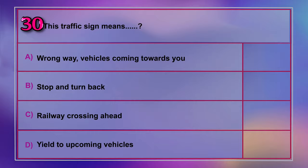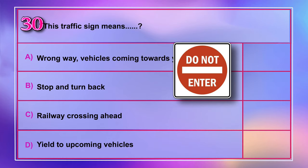Question number 30: This traffic sign means A) wrong way — vehicles coming towards you, B) stop and turn back, C) railway crossing ahead, D) yield to upcoming vehicles. Correct answer is A: wrong way, vehicles coming towards you.